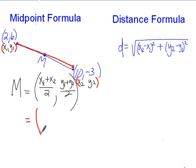And that's simply the average of your x's, which is your first number here, x1 and x2. So I'll go 2 plus 10 divided by 2, comma, average of your y's. So 6 plus negative 3 divided by 2. And now we can simplify those and we'll get an ordered pair for a point.